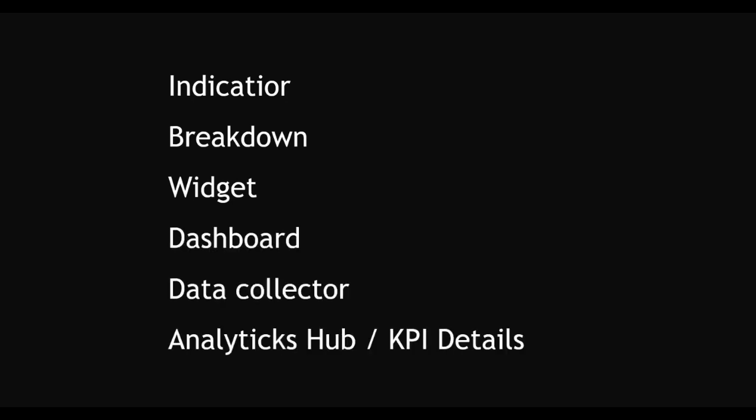The main components of Performance Analytics are: Indicator, Breakdown, Widget, Dashboard, Data Collector, and Analytic Hub or KPI Details. We will discuss each of these in detail with examples. Before we start a practical demo, we need to understand what all these terms mean.